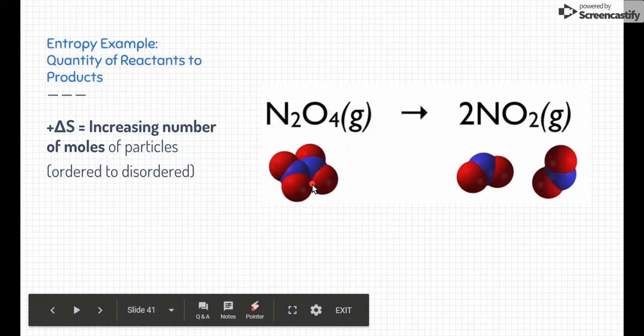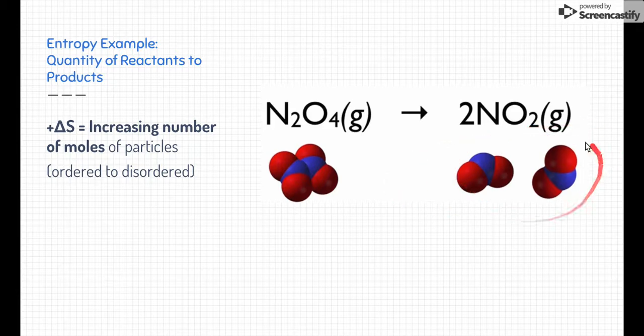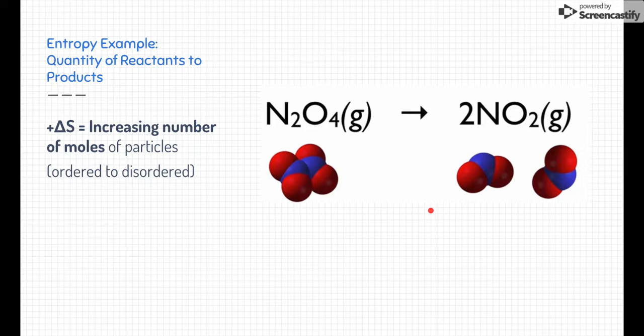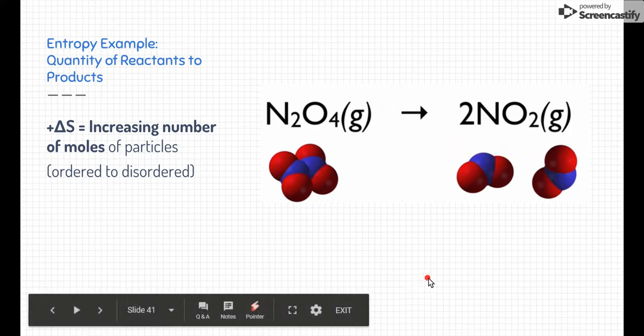But as we go through the reaction, we end up with two particles. That's increasing disorder. So we have an increase in entropy for this example. The opposite is true for a decrease in entropy. If we were to flip this arrow around and go from two moles to one mole, then we would have a decrease in entropy.